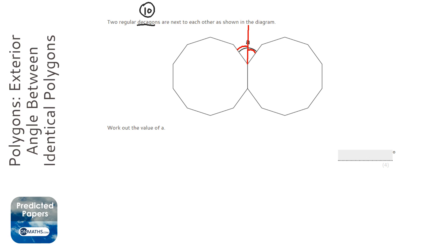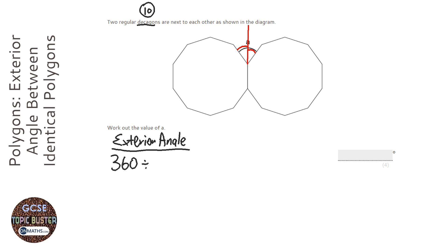To work out the exterior angle, always write down what you're working out. All you need to do is 360 divided by the number of sides the regular polygon has. They have to be regular, otherwise you can't just divide them, because we're assuming they're the same.